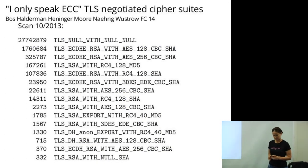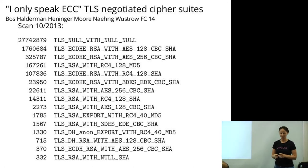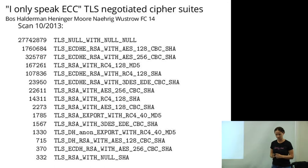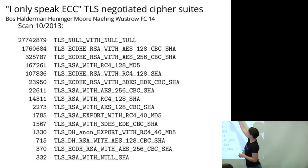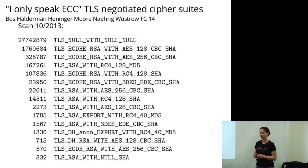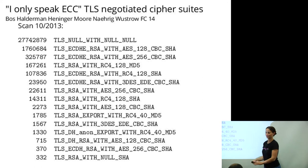Here's the list of cipher suites negotiated when scanning saying we only support elliptic curves. The most common response is servers negotiating the null cipher suite because they don't speak elliptic curves. The next most common is a perfectly good cipher suite: ECDHE-RSA with AES-128-CBC and SHA — ephemeral elliptic curve Diffie-Hellman with RSA signatures, AES 128 in CBC mode, and SHA. You also see some servers responding with non-elliptic-curve cipher suites, meaning they got confused when told we only support elliptic curves. There's a lot of weird behavior out there.